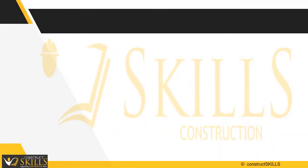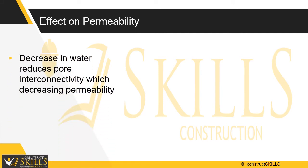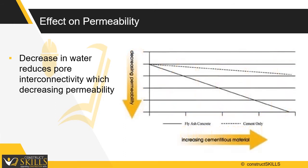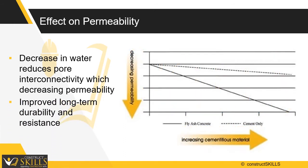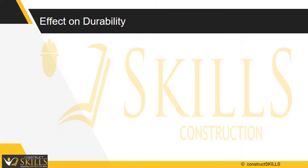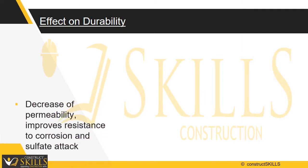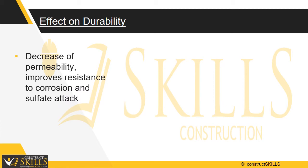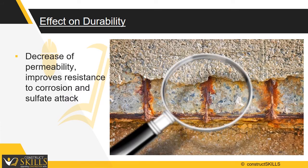Next is the effect on permeability. The decrease in water content reduces the pore interconnectivity of concrete, thus decreasing permeability. The reduced permeability results in improved long-term durability and resistance to various forms of deterioration. As permeability of concrete reduces, it improves resistance to corrosion and resistance to sulfate attack, which improves durability.